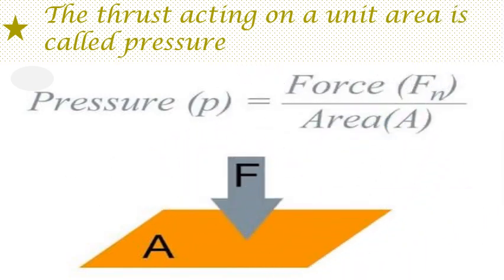In the given example, the thrust which the body was applying on the surface — if we divide that thrust by the area on which it was applied, then we will get to know the amount of thrust acting on a unit area, and this amount of thrust acting on a unit area is called pressure.